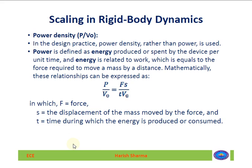Power density P/V₀ equals (F·s/t)/V₀, where s is the displacement moved by the force and t is the time during which energy is produced. This formulation uses power density — power per unit volume — as the relevant design parameter for MEMS, capturing how force, displacement, and time relate to energy expenditure in scaled devices.